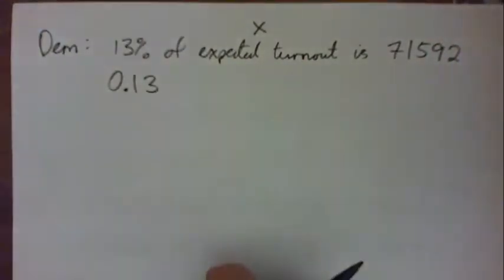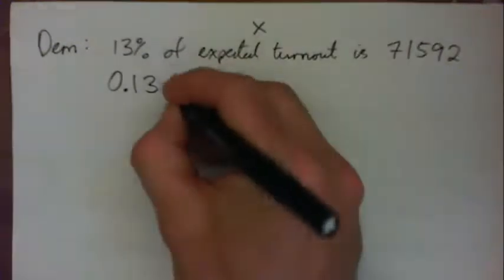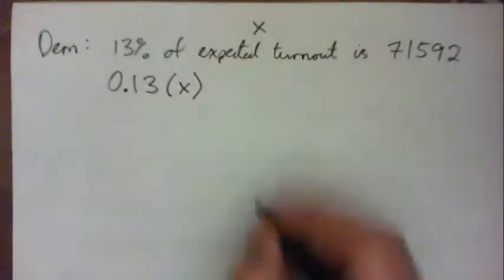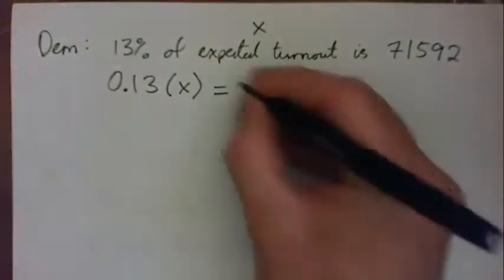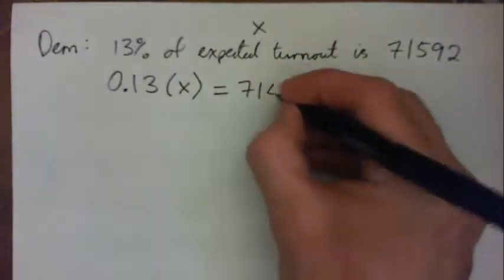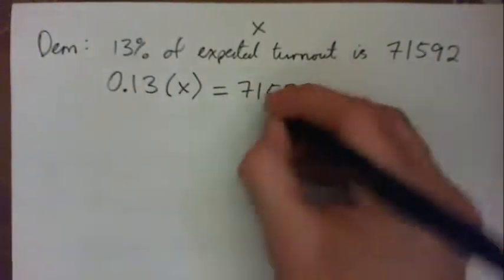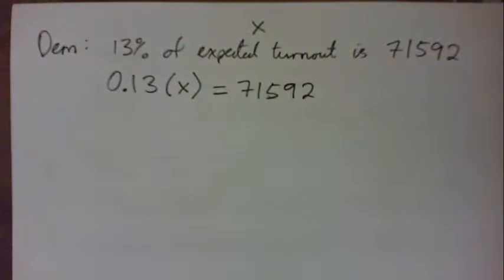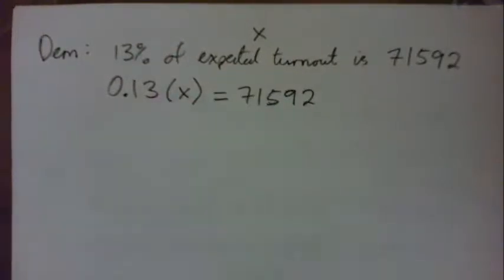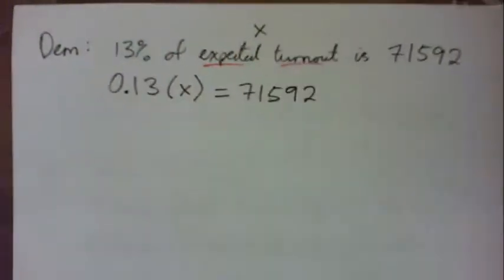So 0.13 times the number we're looking for equals 71,592. Are you okay with that? Any questions? Okay, so now we have to solve the equation for X because we're looking for the expected turnout, aren't we?